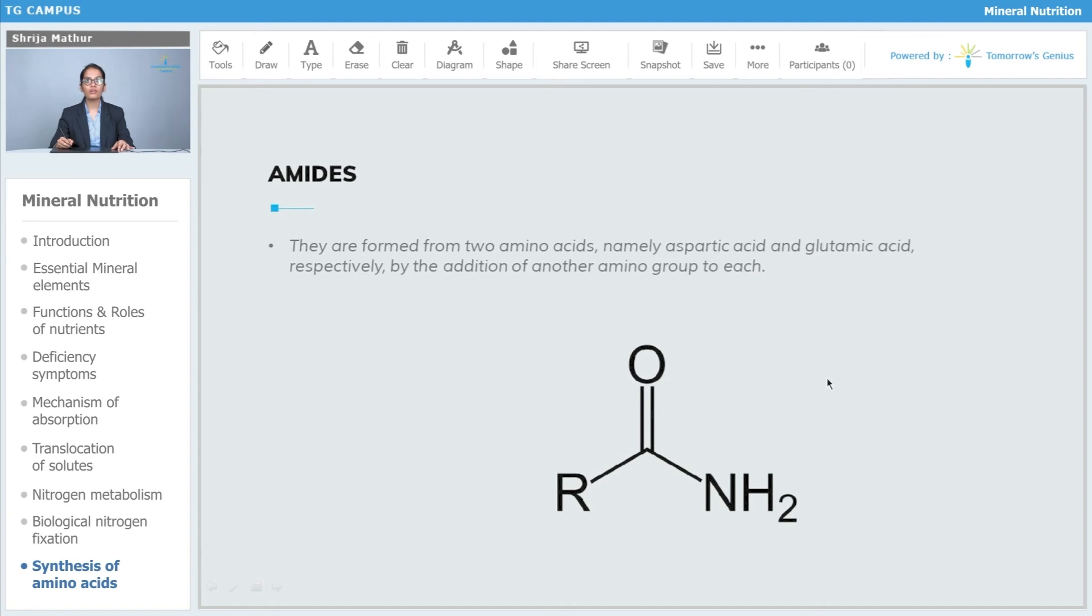They are formed from two amino acids, namely aspartic acid and glutamic acid respectively, by the addition of another amino group to each. The hydroxyl part of the acid is replaced by another NH2 radical.